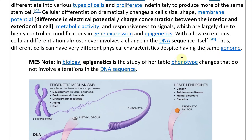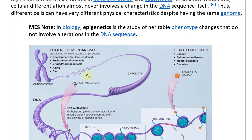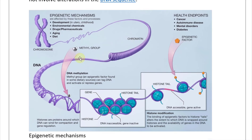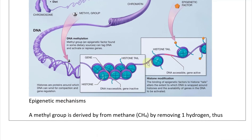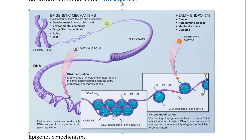This correlates to epigenetics. In biology, epigenetics is the study of heritable phenotype changes — outward characteristics — that do not involve alterations in the DNA sequence. You're not changing the actual DNA, but you can still change how the genetic code is expressed physically. Here's an illustration of epigenetic mechanisms — let's zoom in.